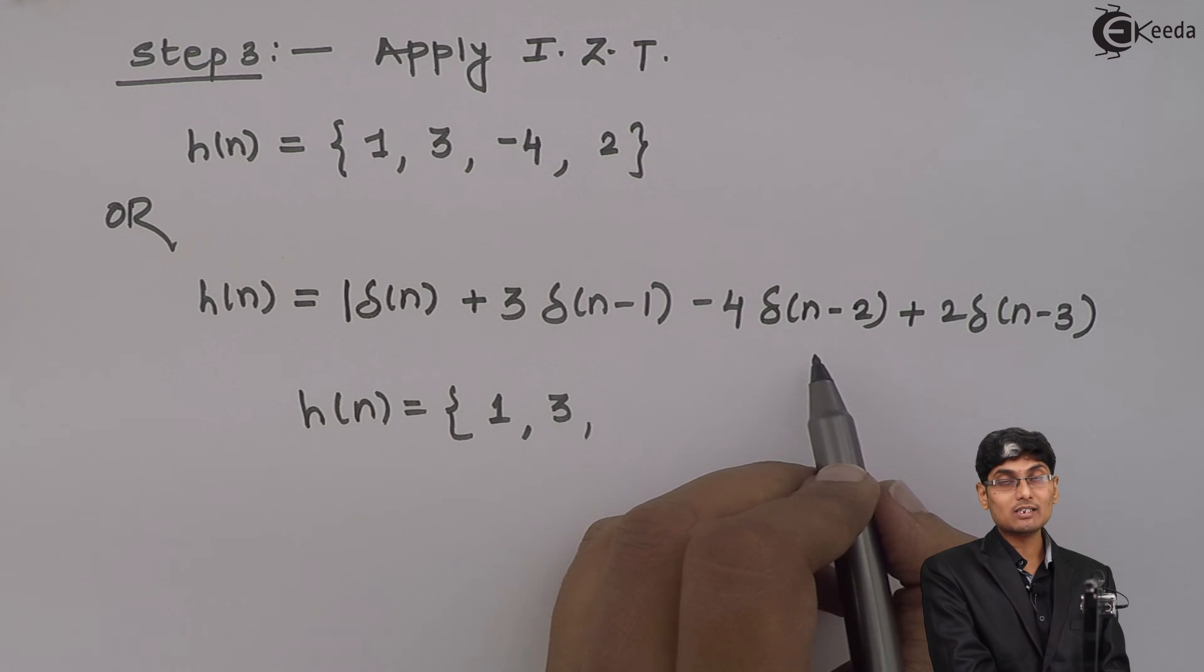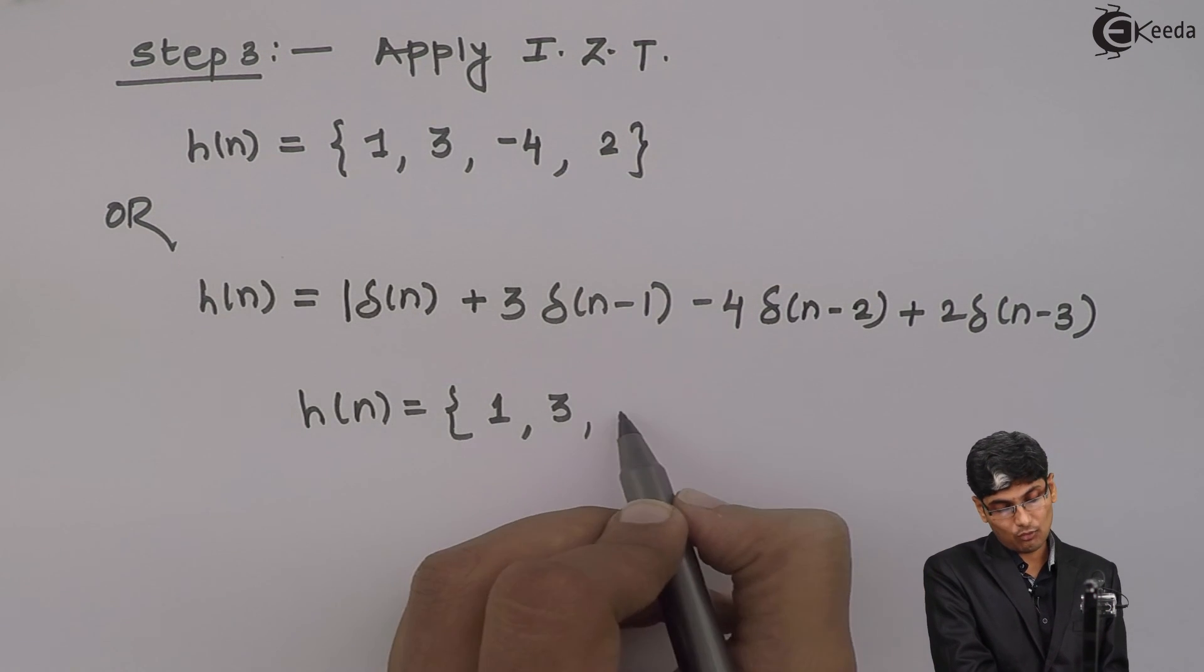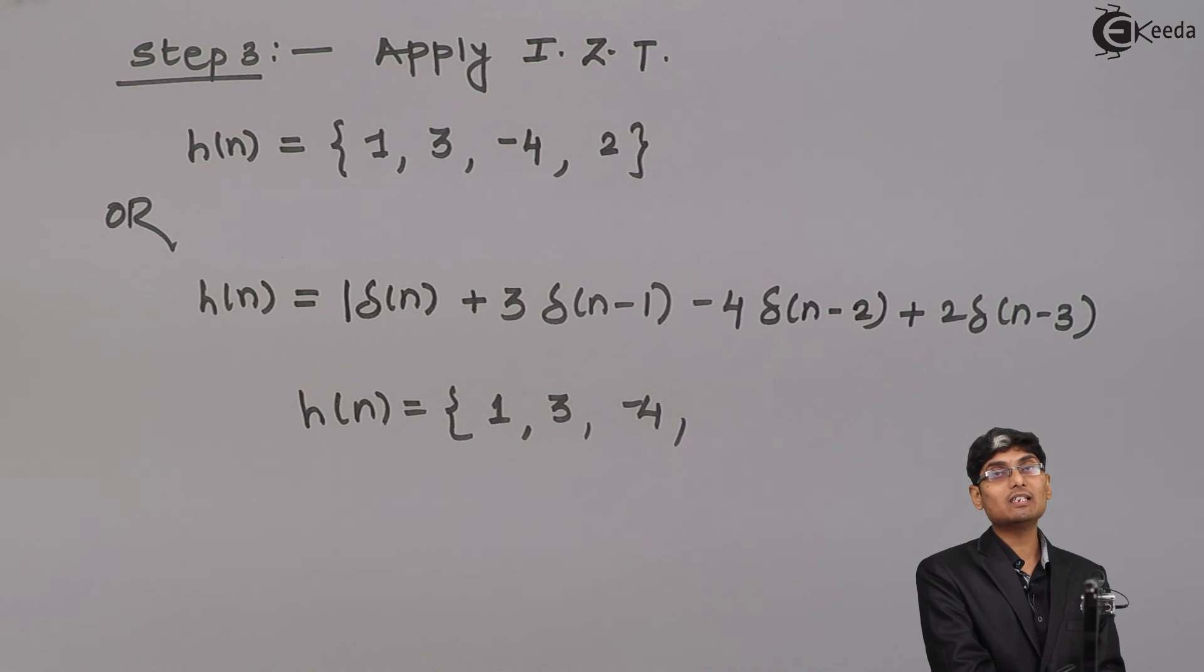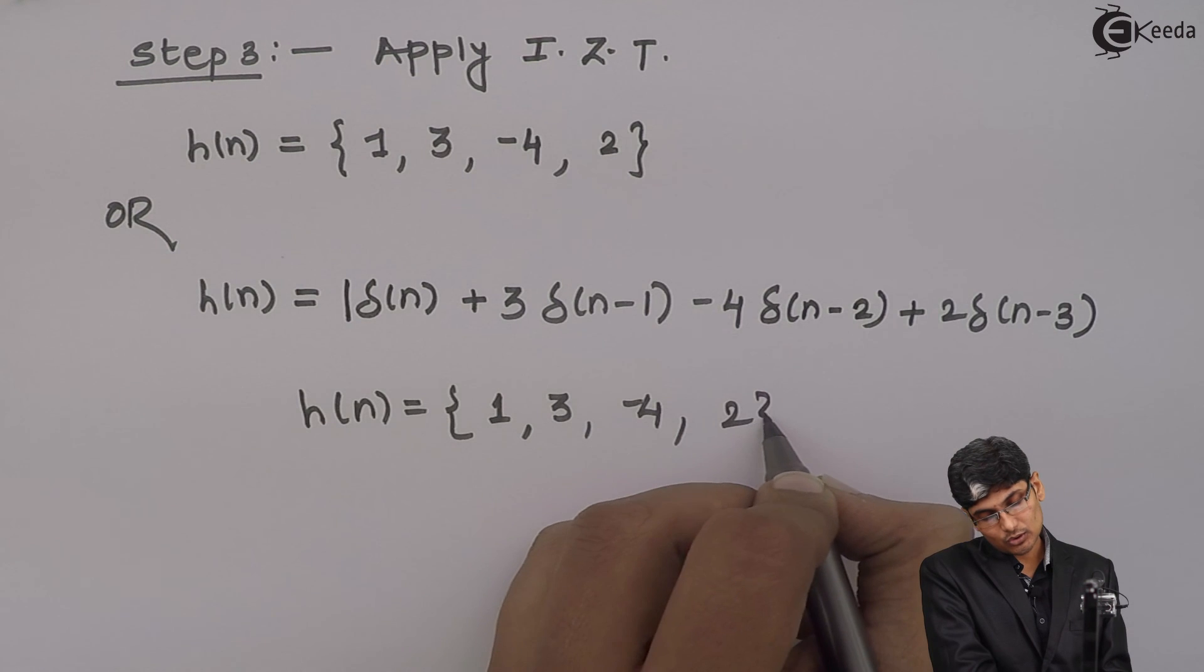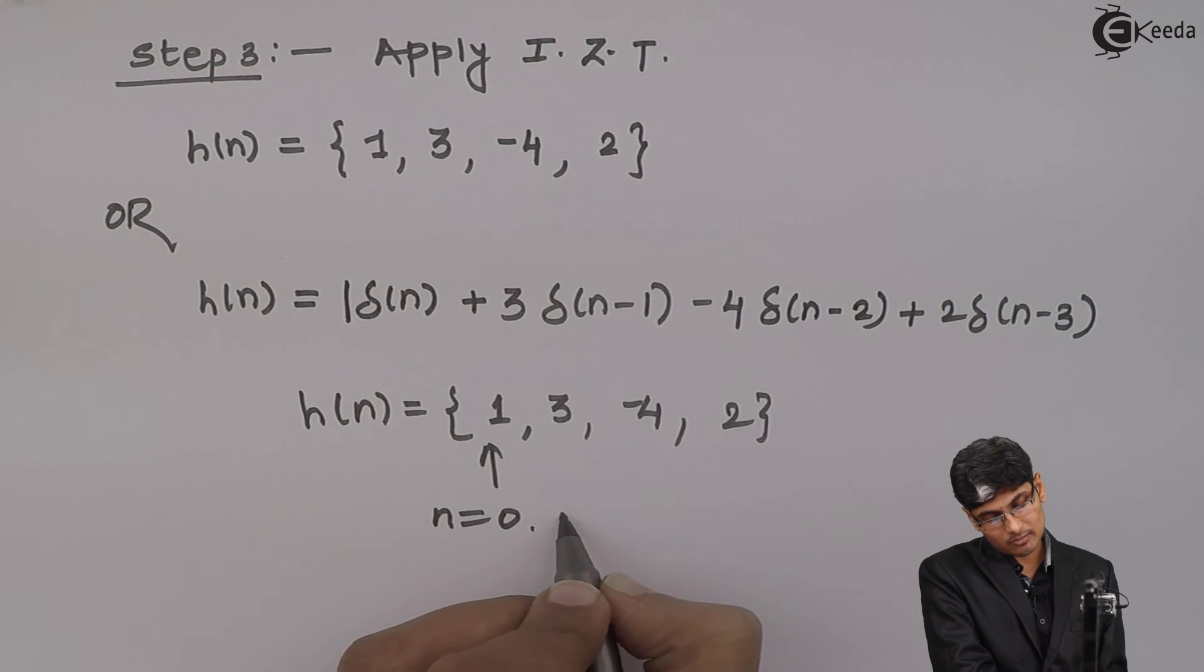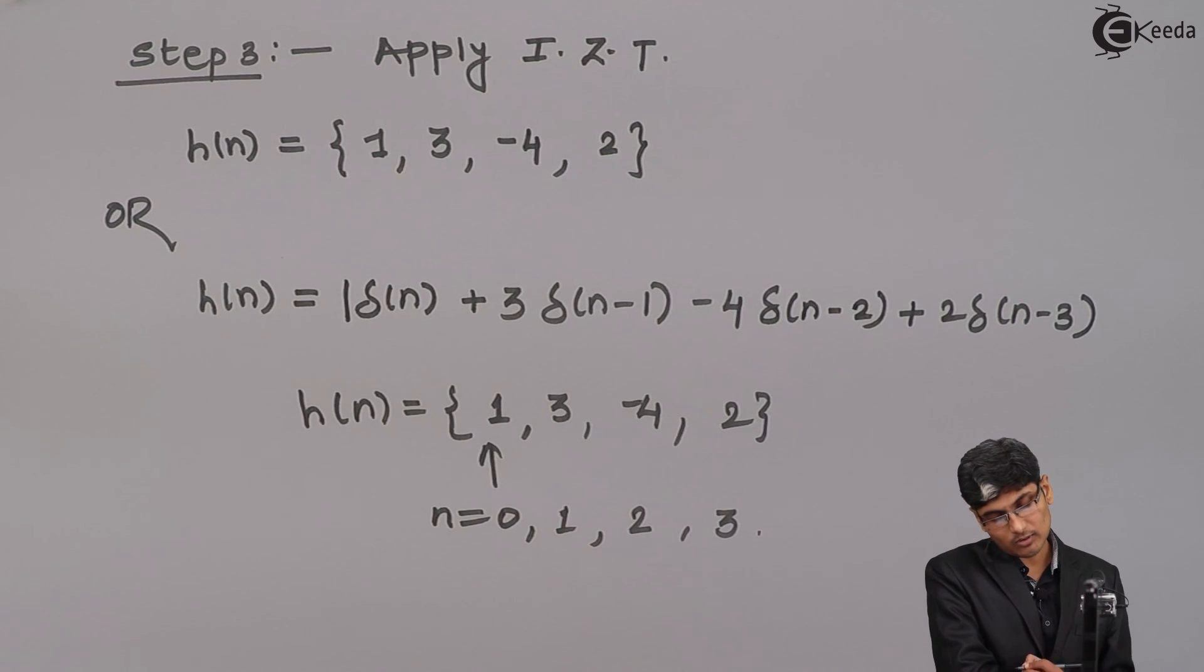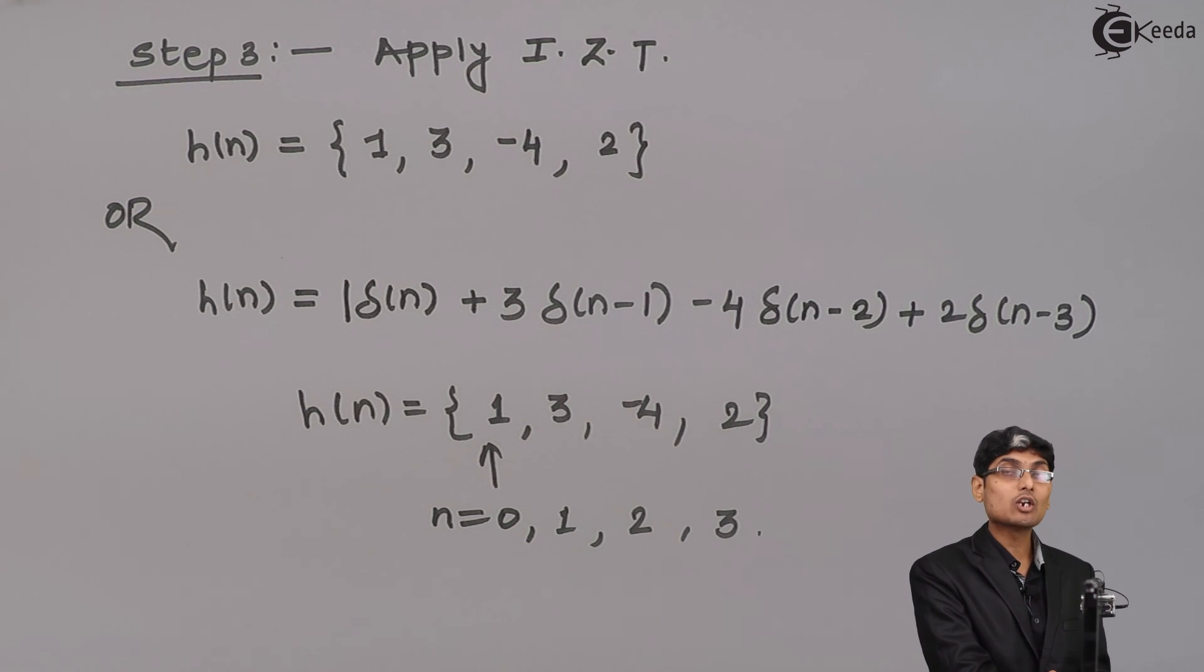Next, I have an impulse which is shifted by 2 but the amplitude is minus 4. So, this is my n is equal to 0. This is my n is equal to 1. This is n is equal to 2 and this is n is equal to 3. So, the given impulse response is 1, 3, minus 4, 2. Thank you.